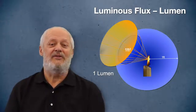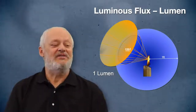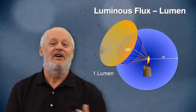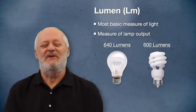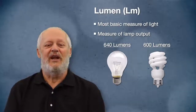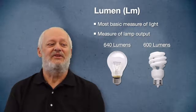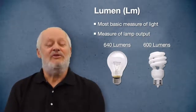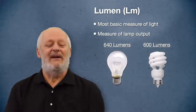We can translate the whole thing to the metric system and it works the same way — you can do this with a one-meter sphere and a one-square-meter hole, and we still get the same lumen because the proportions are all the same. Lumens are really important because they are our most basic measurement of light, and all our other lighting metrics are based in terms of lumens.